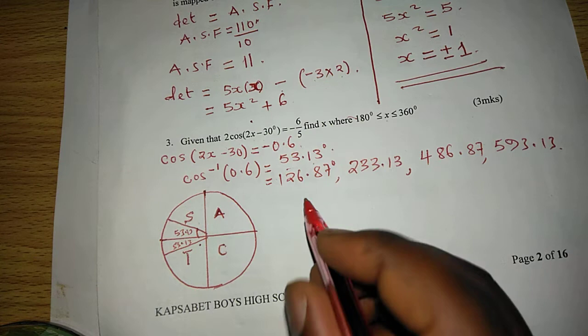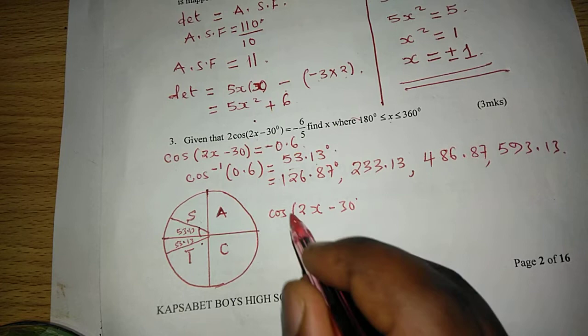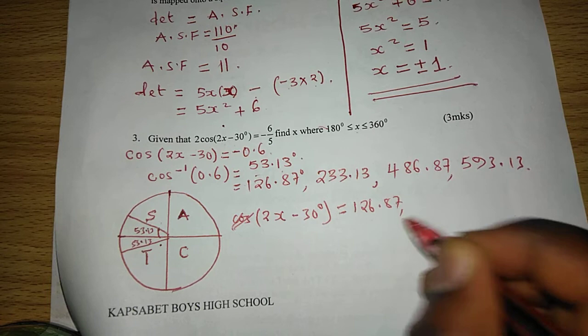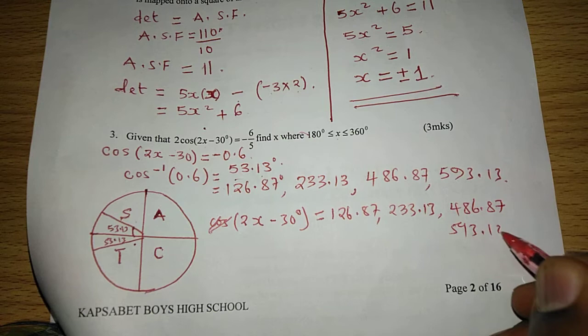With this, now we can get the exact value of x, whereby now we will say, because this one is the cosine of 2x minus 30, now 2x minus 30 degrees equals to all these values: 126.87, 233.13, 486.87, and finally 593.13.